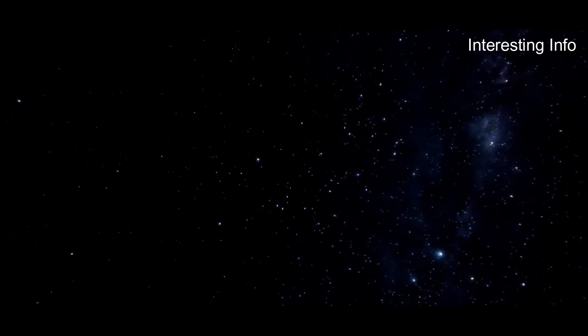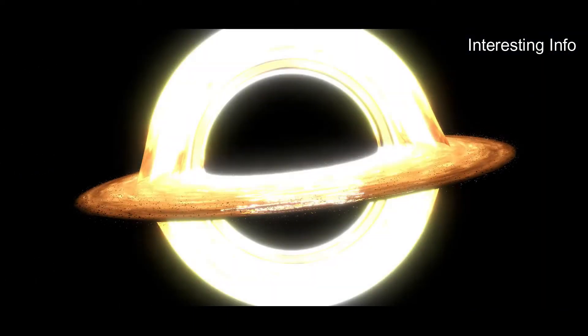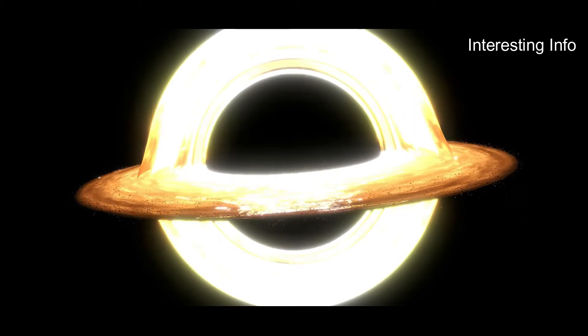Some features of supermassive black holes set them apart from low-mass black holes. The tidal force around their horizon is relatively weak. Again, black holes can be divided into two parts on the basis of rotation.